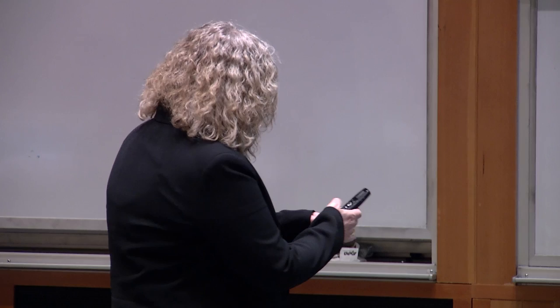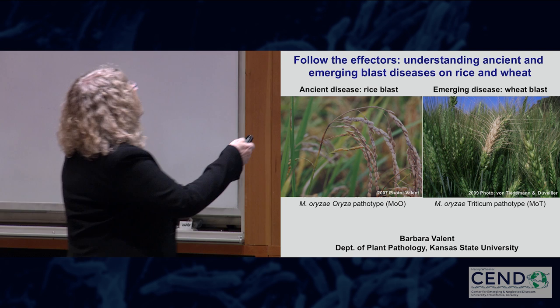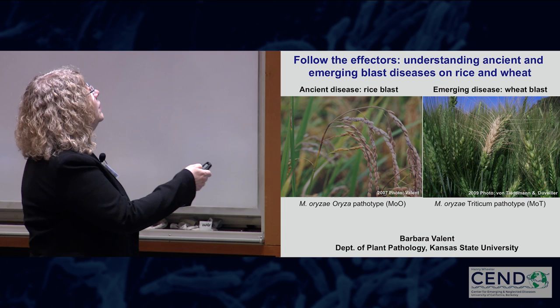I'm really happy to be here. I learned a lot this morning, and rice blast really is a persistent pathogen — the first written reports were in the 1600s. Breeders have been working on this for a long time trying to get resistance genes that can control the fungus, but the fungus is extremely variable and right now able to overcome the resistance we throw at it. My talk is about 'Follow the Effectors: Understanding Ancient and Emerging Blast Diseases of Rice and Wheat.'